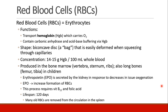Other common cofactors needed to synthesize blood cells include vitamin B12 and folic acid, and patients who lack these cofactors can become anemic. Red blood cells have a lifespan of 120 days, and many old red blood cells are removed from the circulation in the spleen.